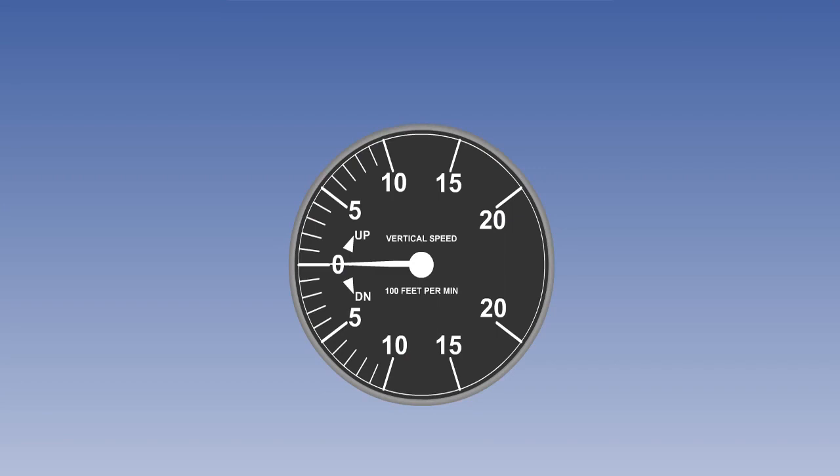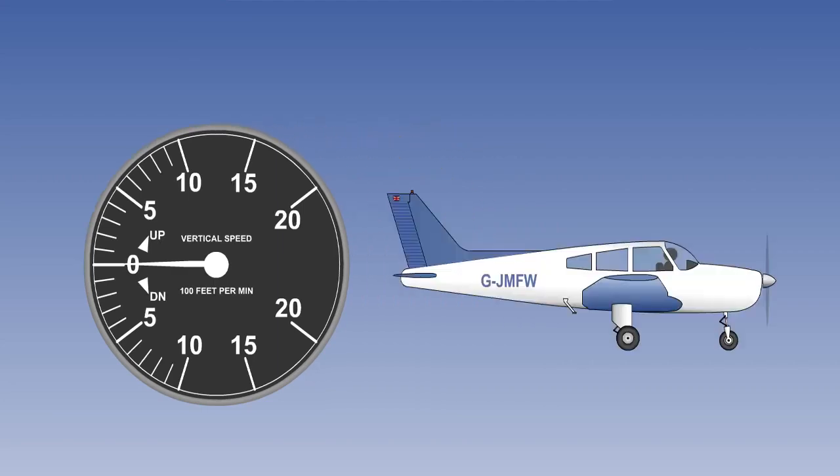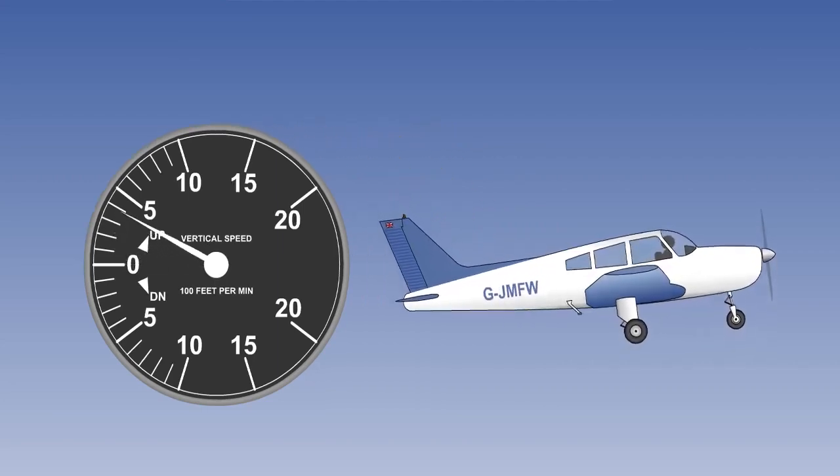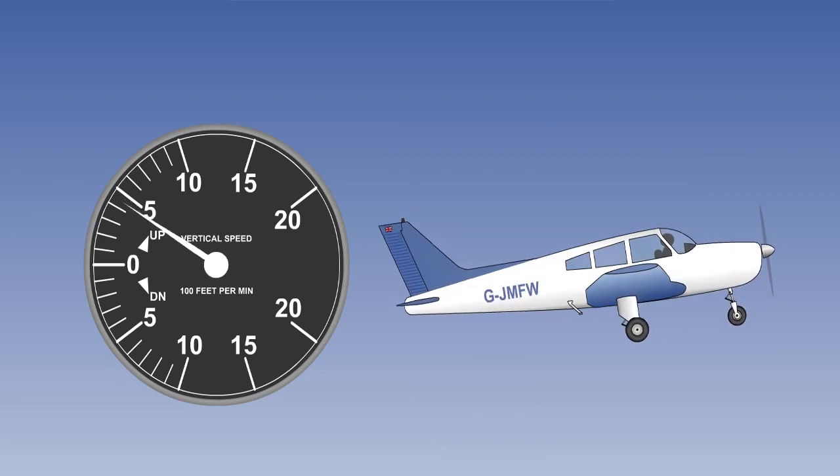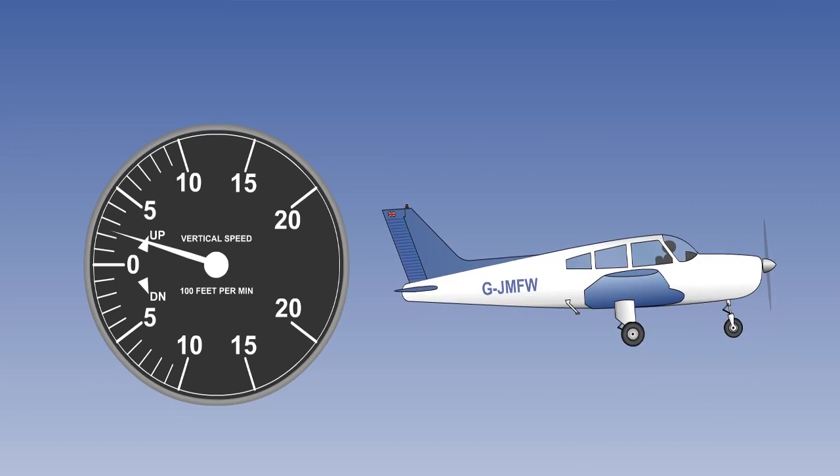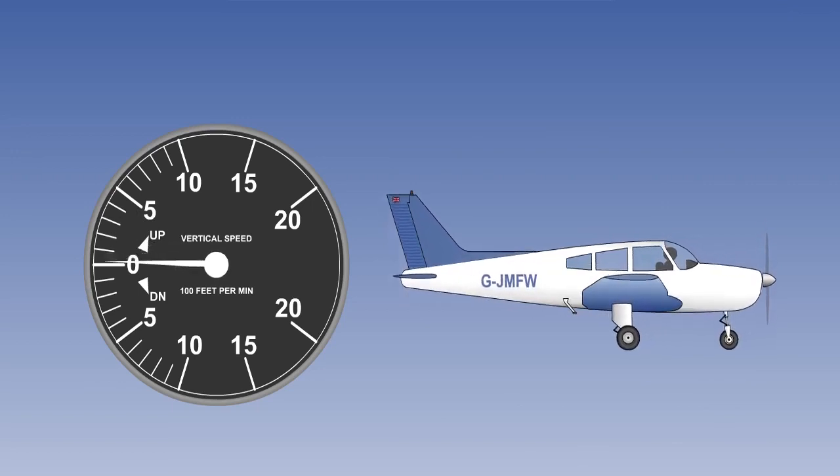Here we can see an example of a typical VSI from a light aircraft. The VSI indicates the rate at which the aircraft is climbing or descending by sensing the rate of change of static pressure. It will also indicate level flight when zero climb or descent is shown. Rates of climb or descent are usually indicated on the instrument dial in feet per minute, although meters per second may occasionally be used.